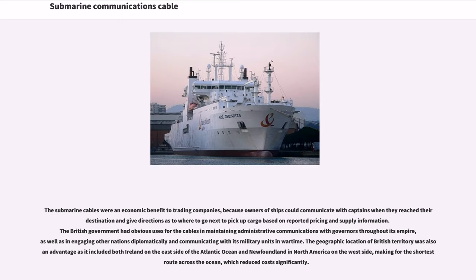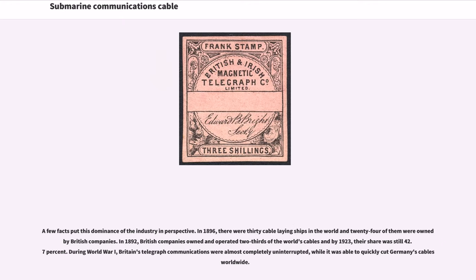The submarine cables were an economic benefit to trading companies, because owners of ships could communicate with captains when they reached their destination and give directions as to where to go next to pick up cargo based on reported pricing and supply information. In 1896, there were 30 cable-laying ships in the world and 24 of them were owned by British companies. In 1892, British companies owned and operated two-thirds of the world's cables, and by 1923, their share was still 42.7%.